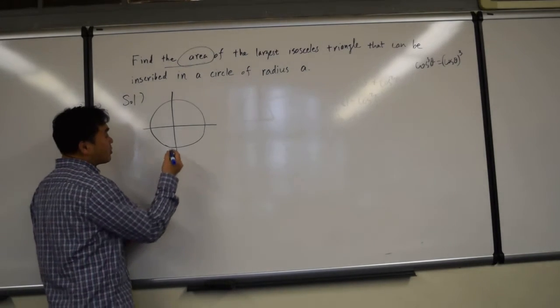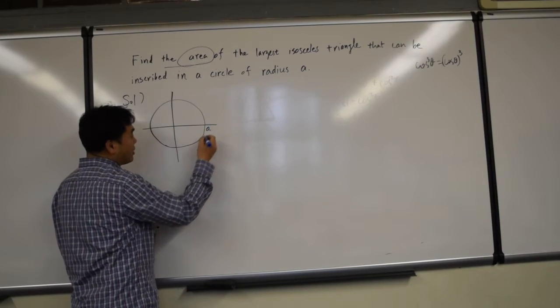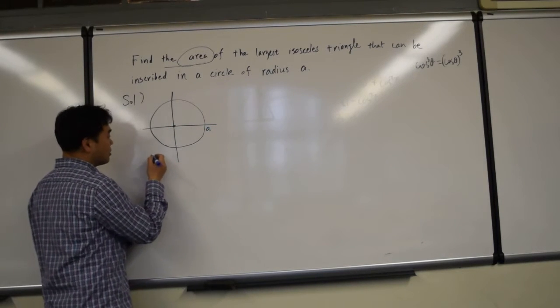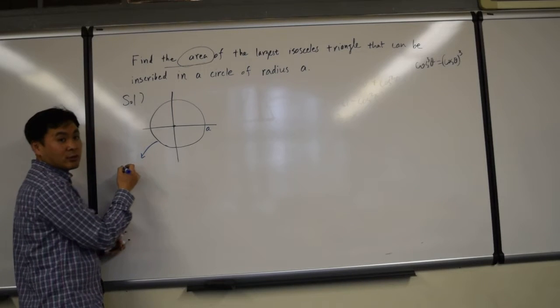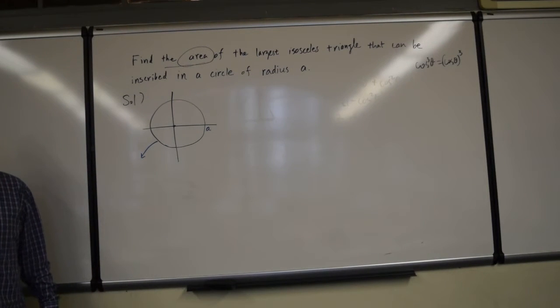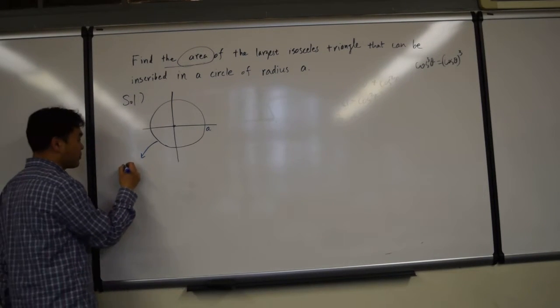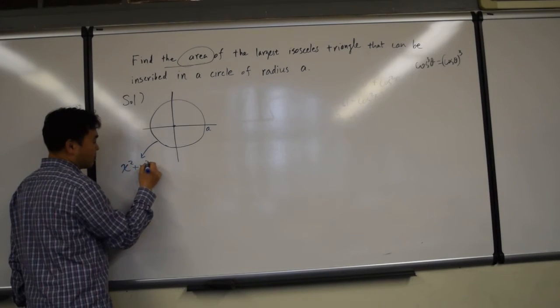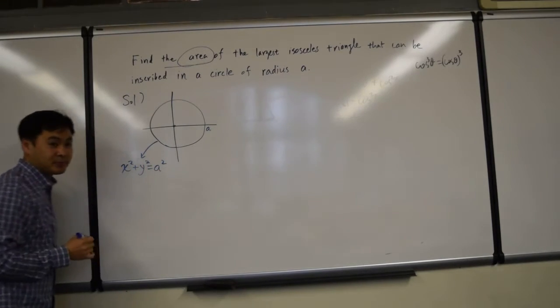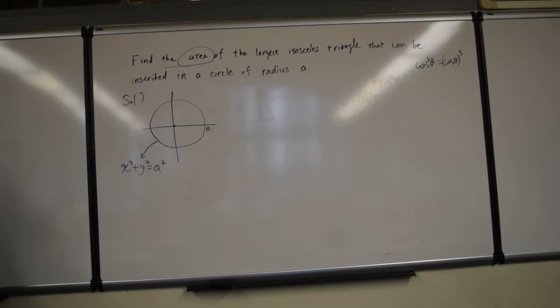Now, think about this circle of radius a centered at the origin. What's the equation of this circle? Can anyone tell me? x squared plus y squared equals a squared, right? Because the radius is a.